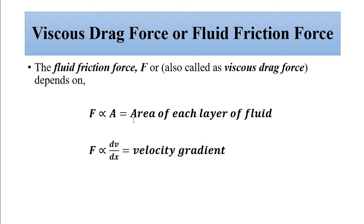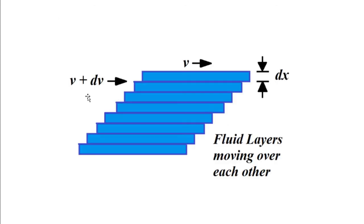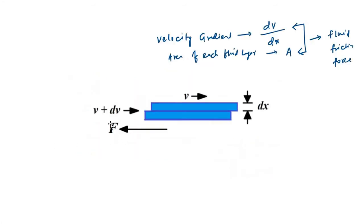Combining these two proportionalities, we get the equation: the fluid friction force F equals minus η times A times dv/dx. Here η is the constant of proportionality called the coefficient of viscosity. The negative sign is because the fluid friction force acts in the opposite direction to the movement of the fluids — it acts opposite, thereby opposing the movement of the fluid layers.